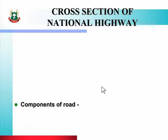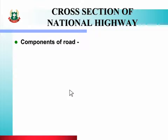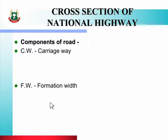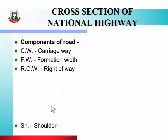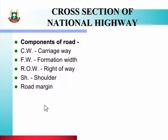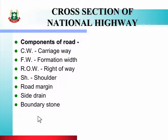First, let us see the components of a road. The components of a road include carriage way, formation width, right of way, shoulder, road margin, side drain, and boundary stone. When drawing the cross section of a road, all these components need to be included.